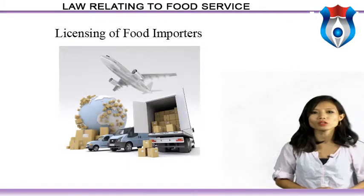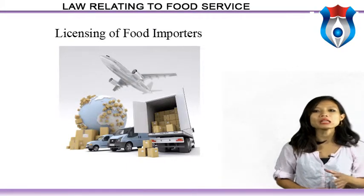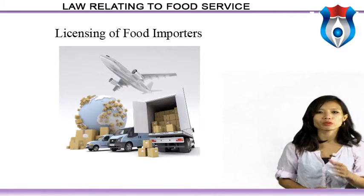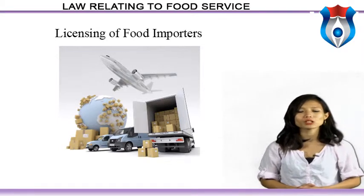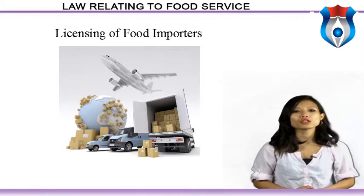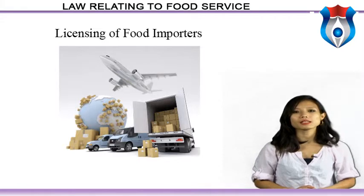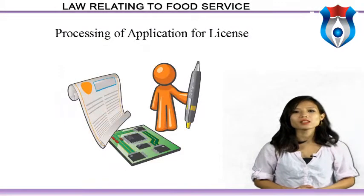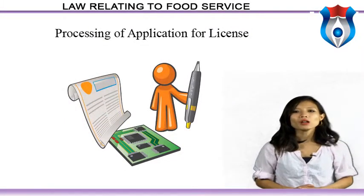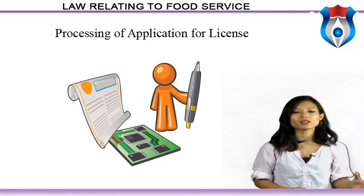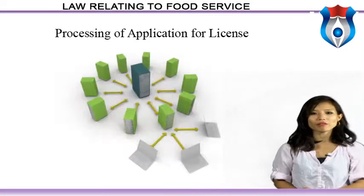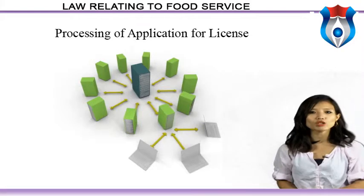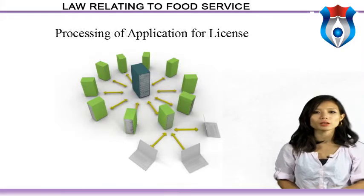Upon receipt of a completed application for license along with all documents and requisite fees, the licensing authority shall, if suitably satisfied, issue a license to the applicant as a food business operator and food importer in the format prescribed by the food authority. The food importer shall ensure compliance with all conditions of the license. The processing of application for license by the food importer shall be governed by FSS Regulations by the central licensing authority.